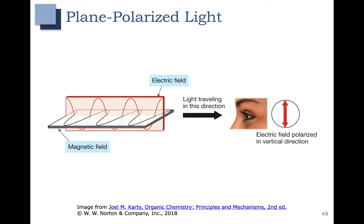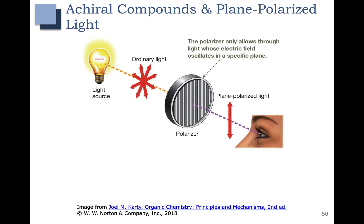Instead of going in a bunch of different directions, we want the light to be polarized in one direction. In this particular picture, this is representing the direction that the electric field is polarized in — you can see it's polarized in the vertical direction. We have a light source, and ordinary light oscillates in all sorts of different directions. What the polarizer does is it has little slits that only allow light whose electric field oscillates in this particular plane to go through. Then we only have the light plane polarized, or pointed in one direction.